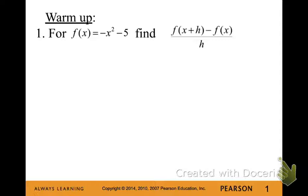So let's start with the difference quotient. For f(x) equals negative x squared minus 5, find that difference quotient. Pause the video and do that and then come back and check your work.